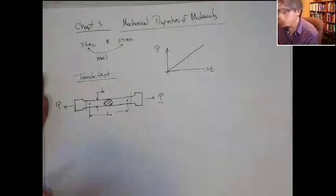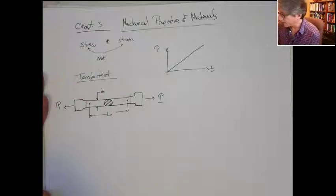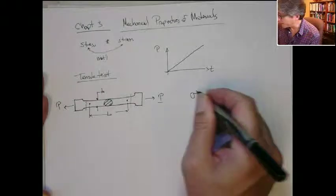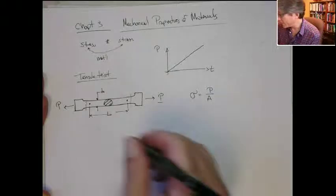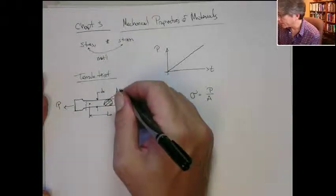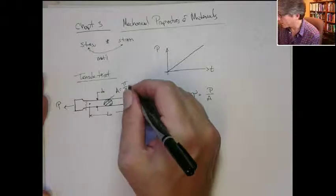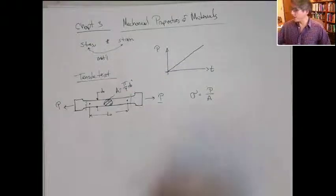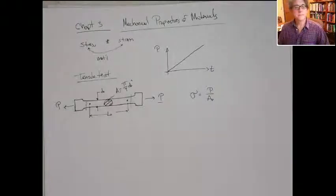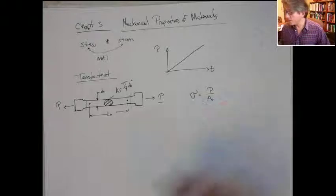Now, if you know the load applied, you can actually get the stress. That's the load over the cross-sectional area. In this case, the area is pi over 4, D-naught squared. And we're going to just consider the initial area, right? So actually, I can get the stress as a function of time.